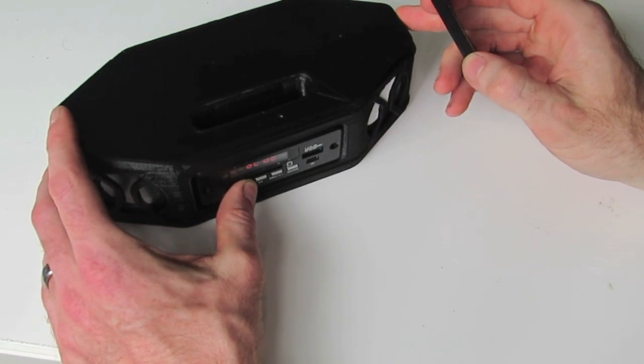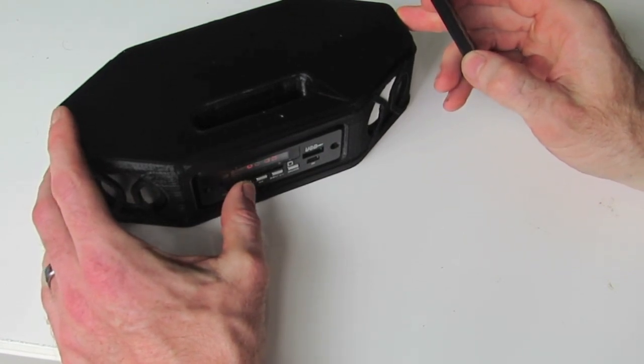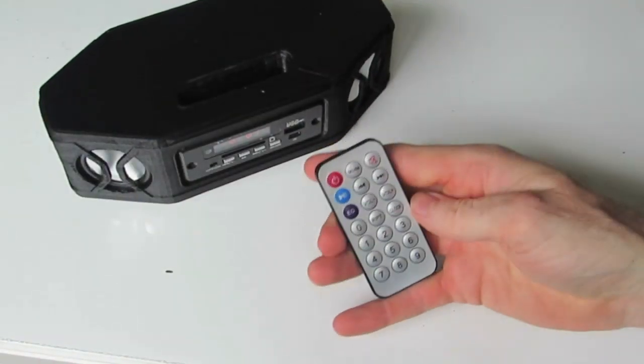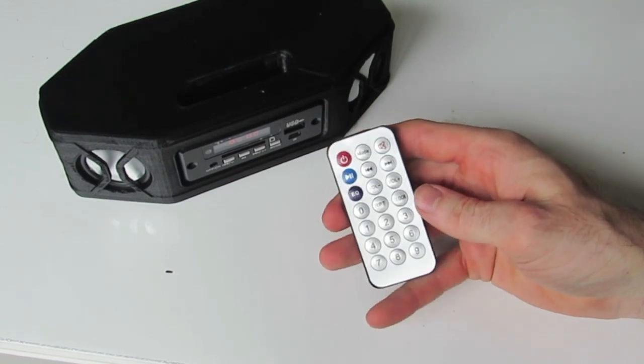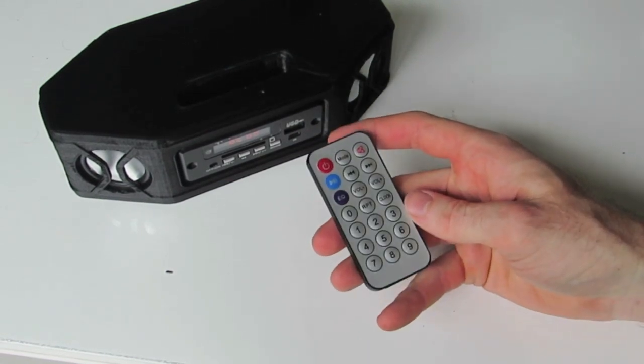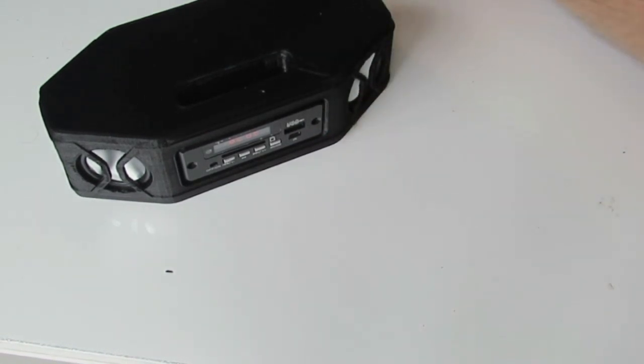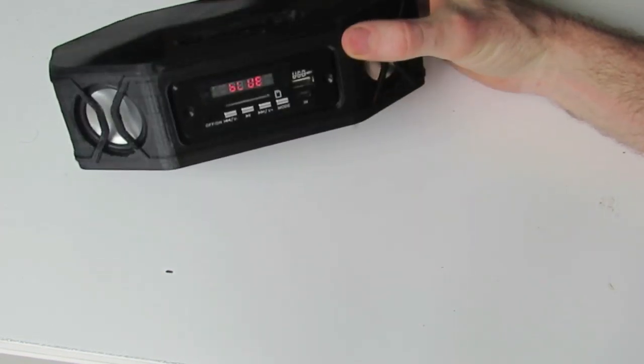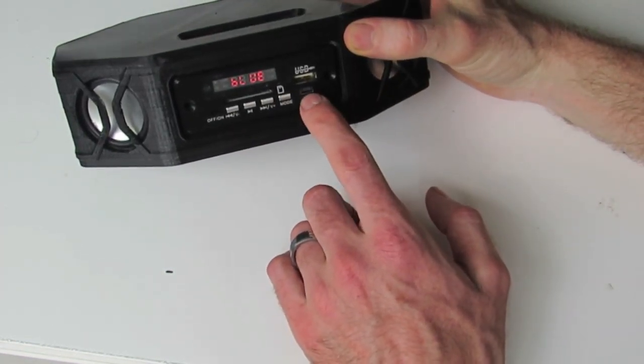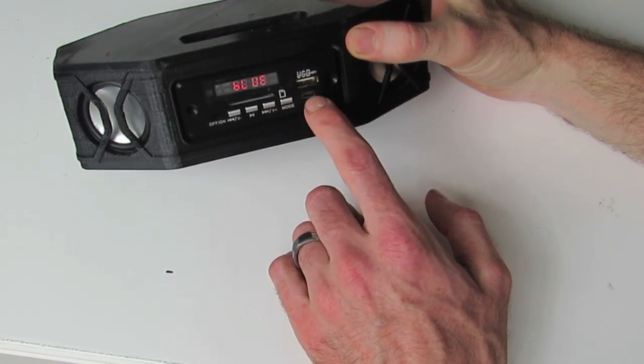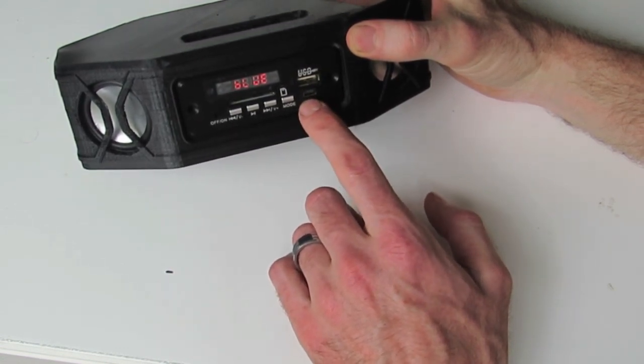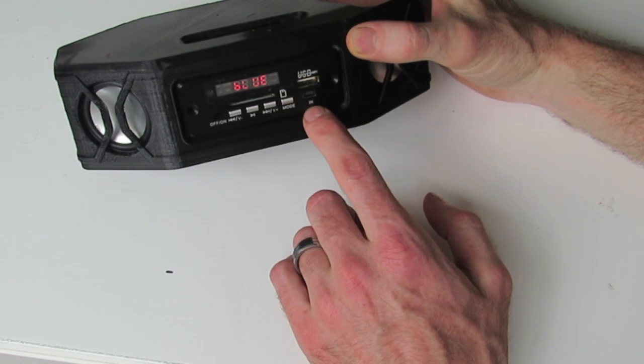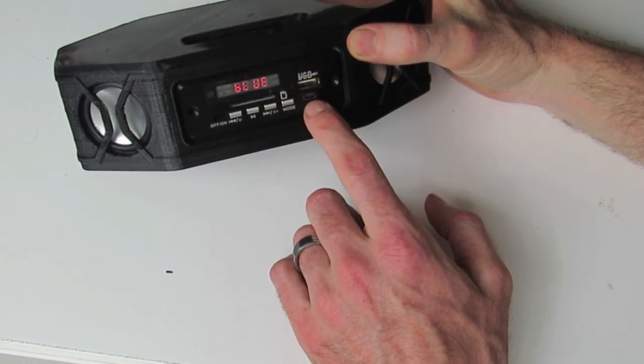So there you go, it comes with a little remote as well, as well as being able to be controlled from the front panel. You'll notice the remote has got some basic functions on it. And as mentioned before, it's just charged via a mini USB port on the front here, which you can connect to either USB port on your computer, or any other 5 volt charging device.